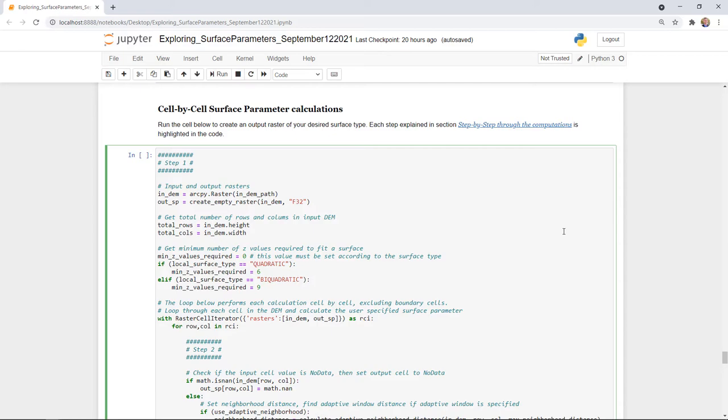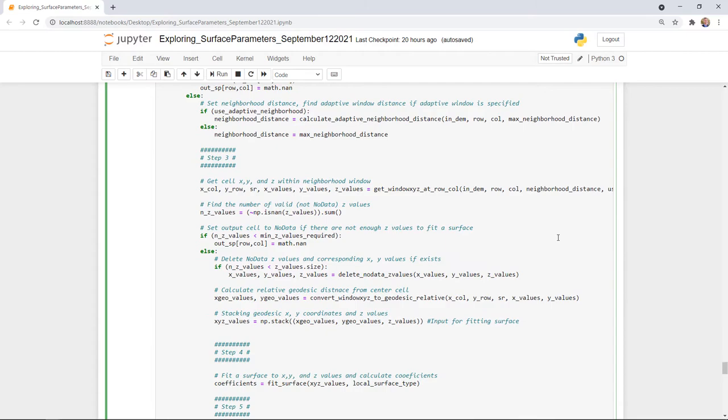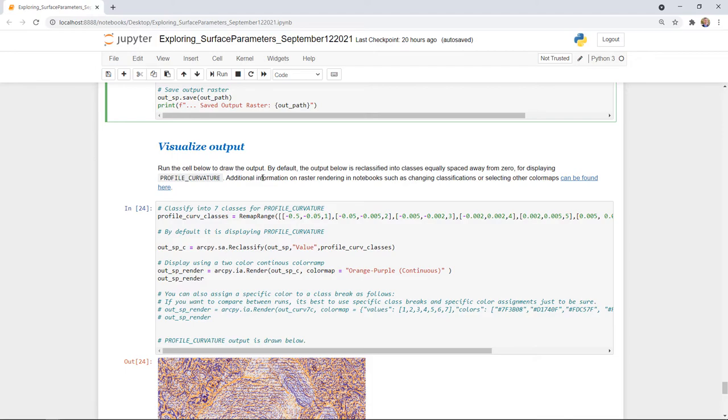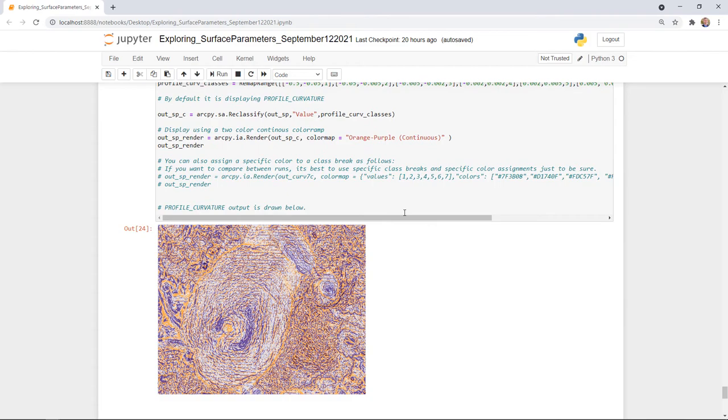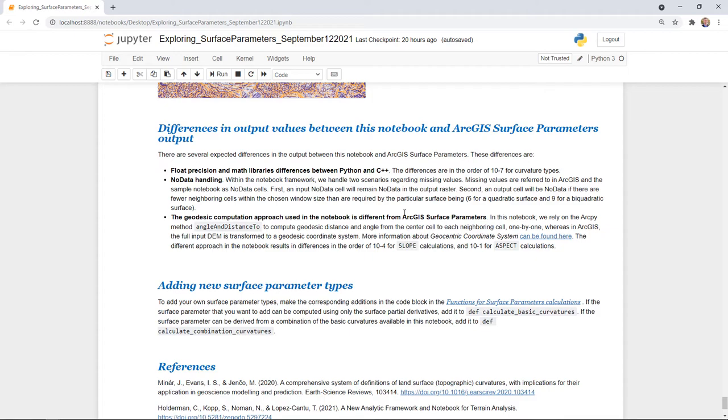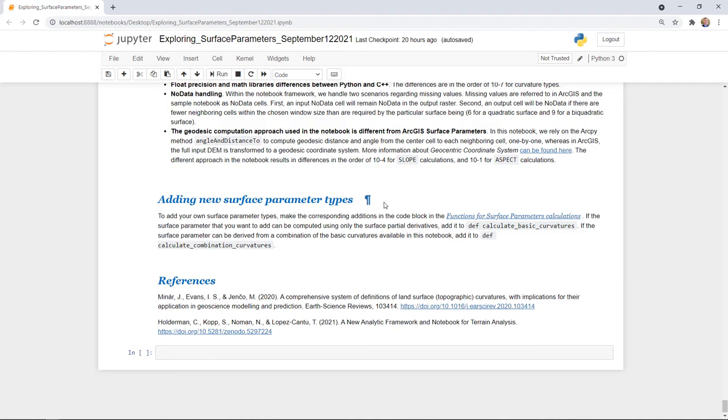So these are the same six steps outlined above, but here shown in code instead of in text. So after each of these six steps, we create an output. There's some pre-built rendering here for curvature type. There's other types of rendering that we'll add here in the future as well. Some explanation of the differences that we talked about previously between the notebook and the ArcGIS surface parameters tool, a note about how to add your own new custom surface types, and then the key references. In this case, which was Minar's paper for the curvatures and then referencing the paper that this notebook for this conference was part of.